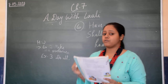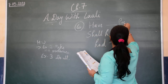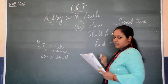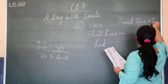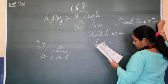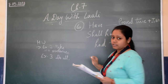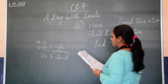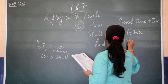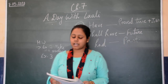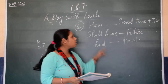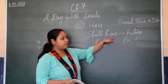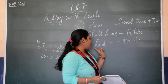Children, have is used with present tense, and with pronouns I and we. Shall have means future tense. And had is used with past tense. So have is used when something is happening now; shall have means future; and had means past.